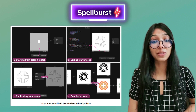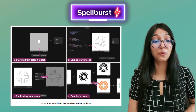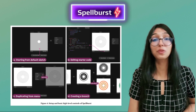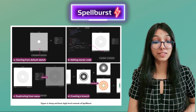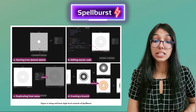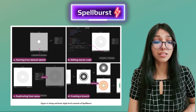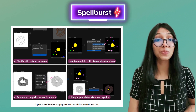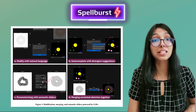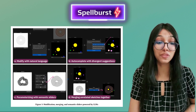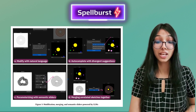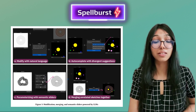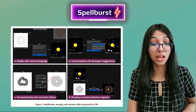It all starts with an initial prompt, like a stained glass image of a beautiful bouquet of roses. But here's the magic — Spellburst doesn't stop at generating code. Artists can use dynamic sliders or specific modification notes to tweak the details, like making the flowers a darker shade of red.